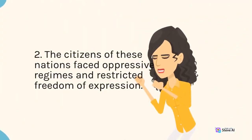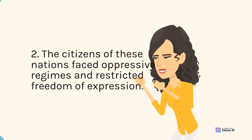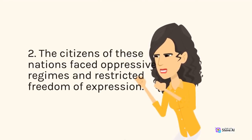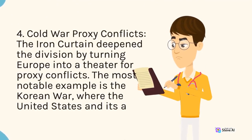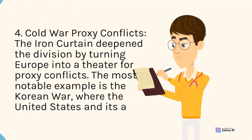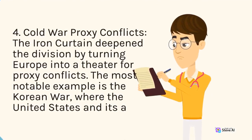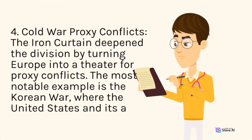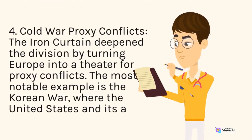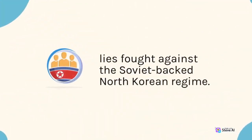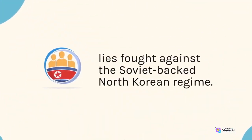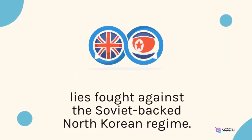The citizens of these nations faced oppressive regimes and restricted freedom of expression. The Iron Curtain deepened the division by turning Europe into a theater for proxy conflicts. The most notable example is the Korean War, where the United States and its allies fought against the Soviet-backed North Korean regime.